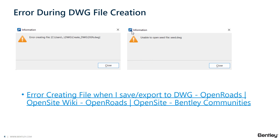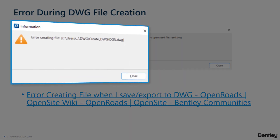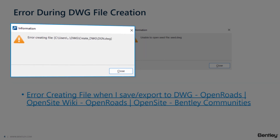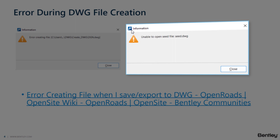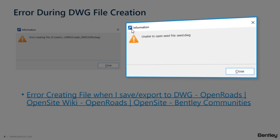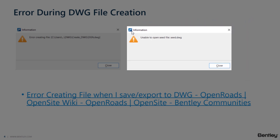For our first point, let's look at some errors that occurred during DWG file creation. On the left, you see the error creating a file, which is a common issue for users. This could be due to permissions, the file being already open, or a MicroStation error in general. The error on the right deals with a seed file missing or potentially being bad, or it could also be a MicroStation error.